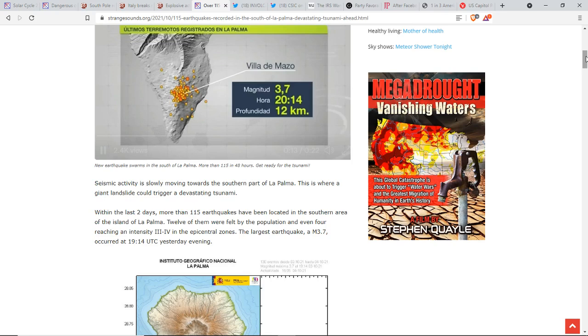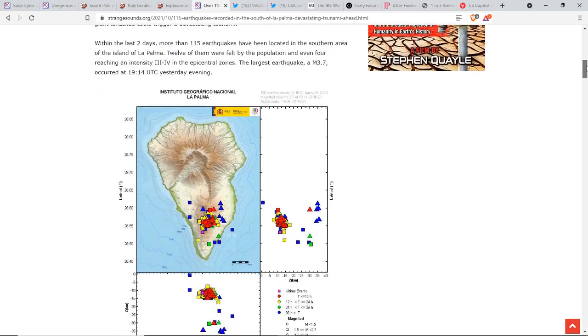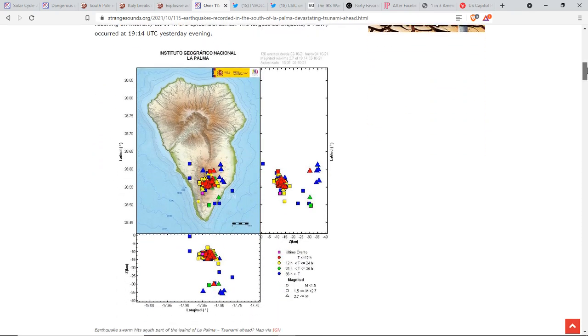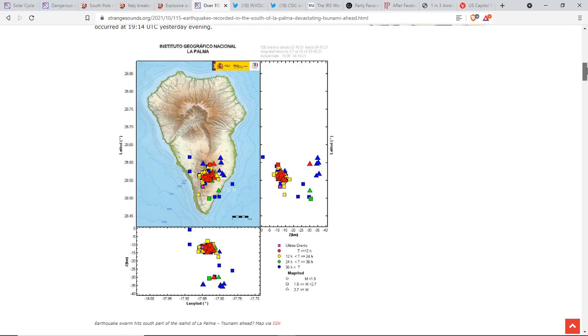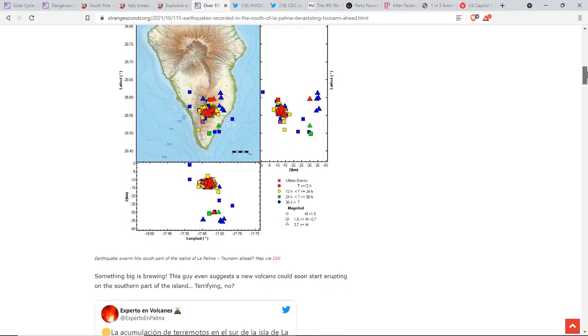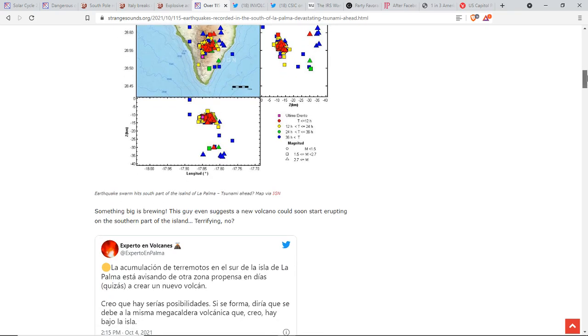Within the last two days, more than 115 quakes have been located in the southern area of the island of La Palma. Twenty-seven of them were felt by the population and even four reaching an intensity of three to four in the epicentral zones. The largest quake of 3.7 occurred at 1914 UTC yesterday evening, as we can see. So the frequency has been increasing and the magnitude has been increasing. So something is brewing.